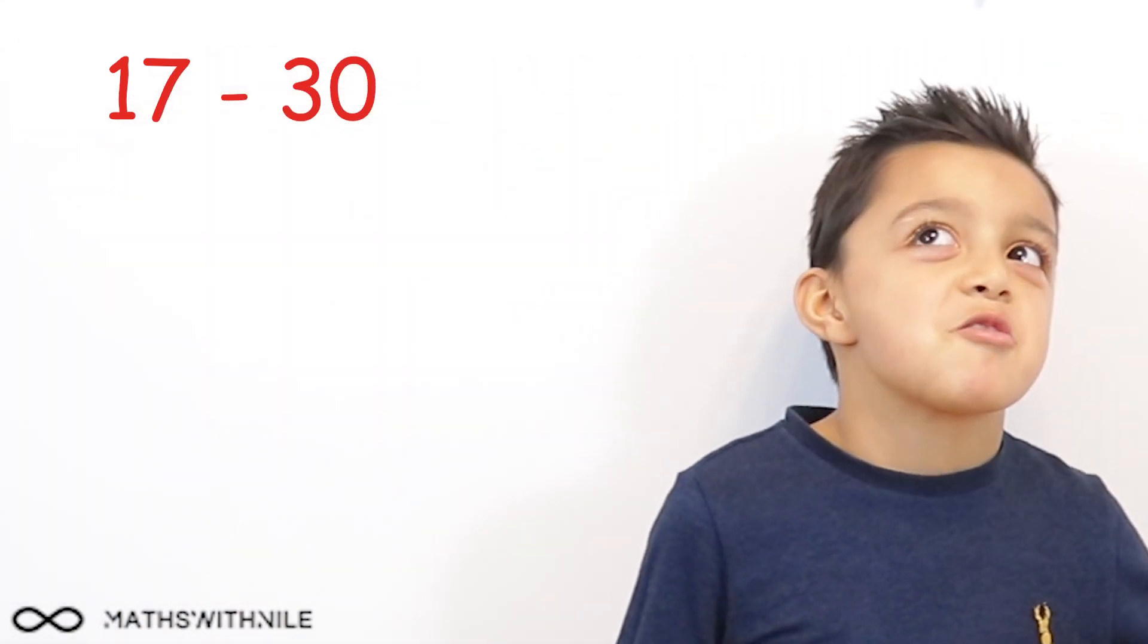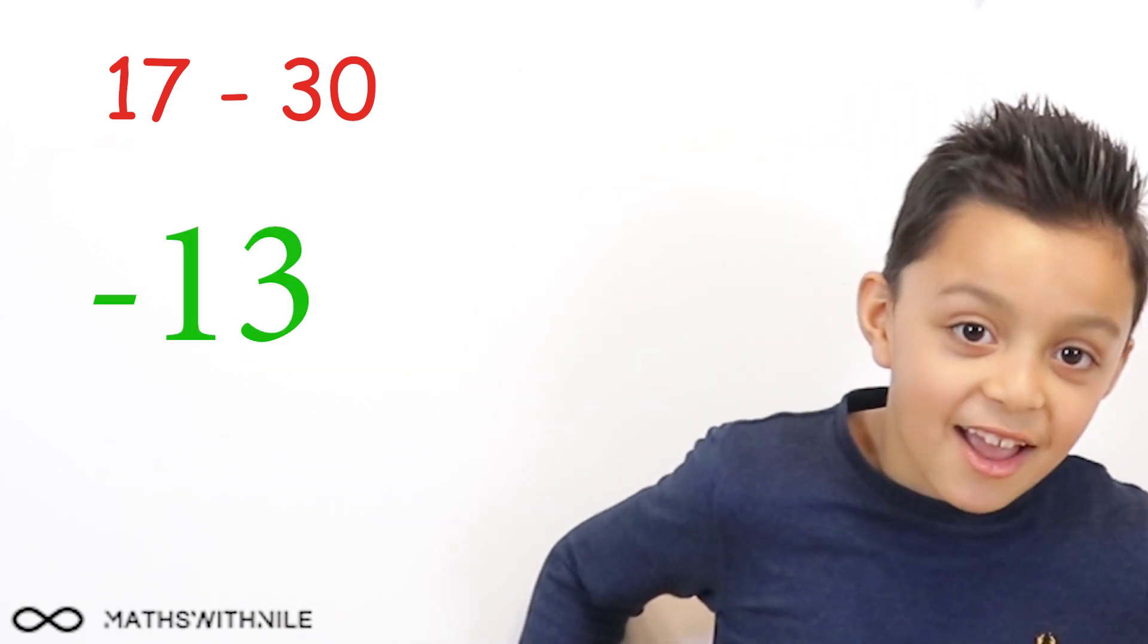One more. What is 17 take away 30? Use your method of going to 0 and then continuing on. 17 take away 30. So what's 17 take away 17? 17 take away 0. What plus 17 equals 30? So what's the answer? Minus 30. Very good, Niall. That was tricky. It was tricky, but you got there in the end. Well done.